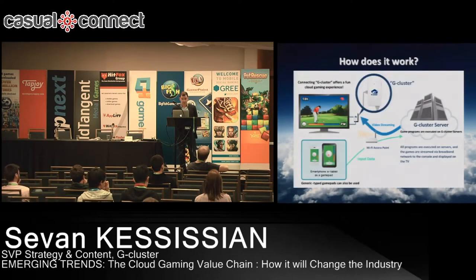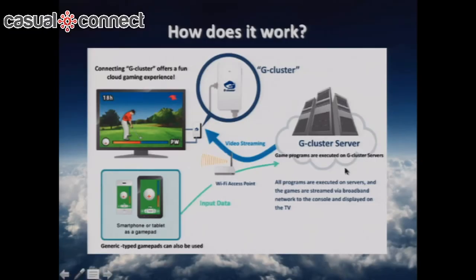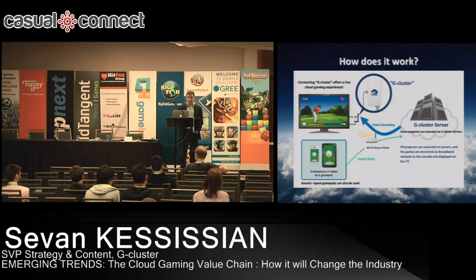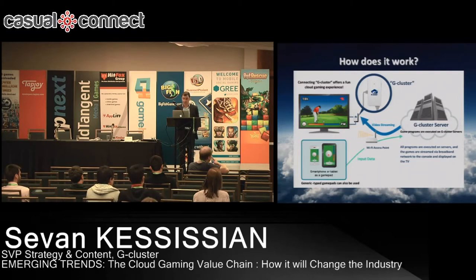How does cloud gaming work? You have game servers that are processing the games, and those games are then streamed over the network to connected screens. Cloud gaming allows you to take your game and put it everywhere — on any connected screen. In theory it can be in your car, in your living room via a set-top box or smart TV, on your PC, your Mac, and of course on your mobile phone. What you are seeing in this diagram is our game machine.